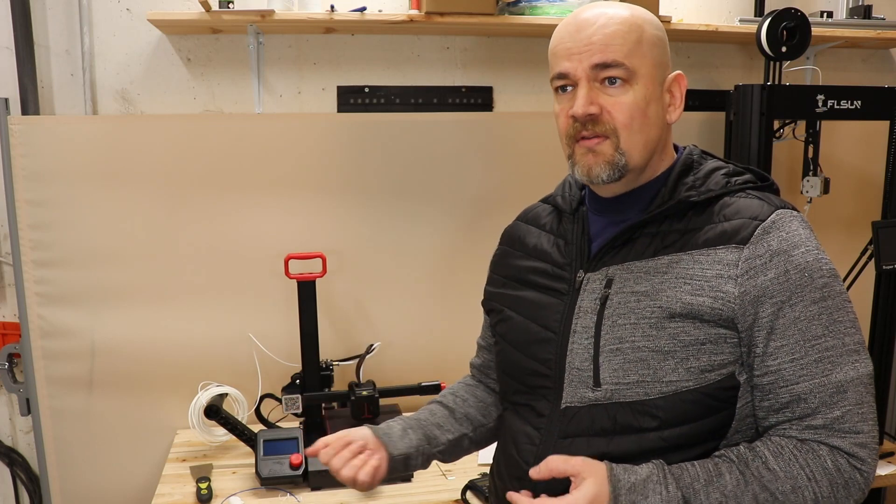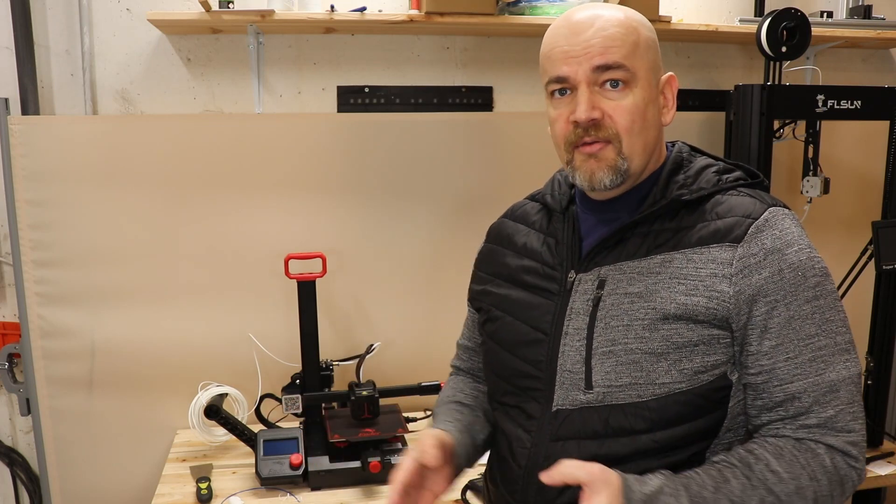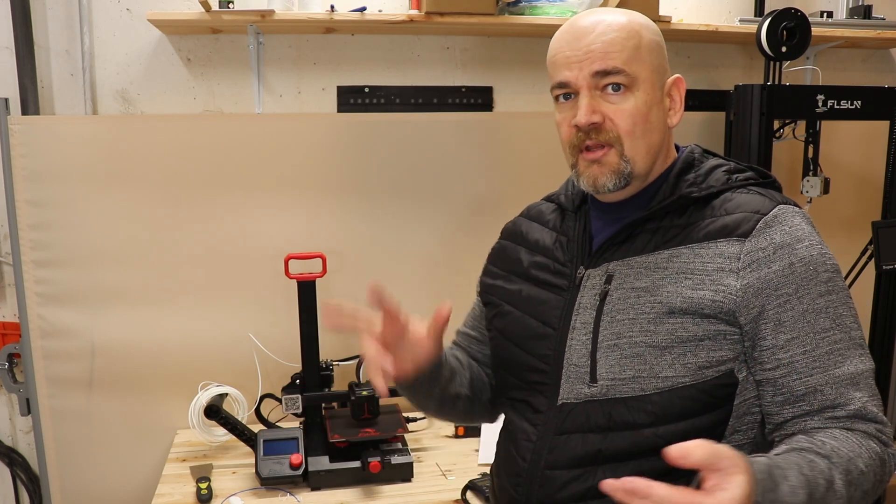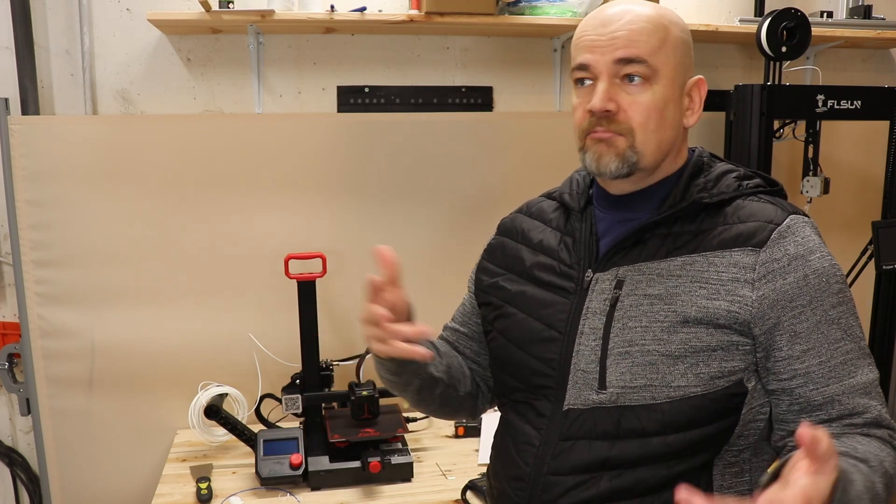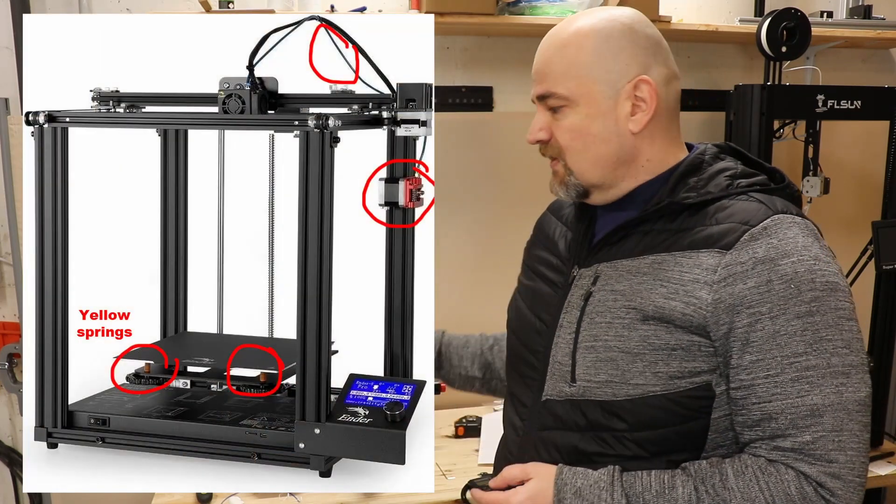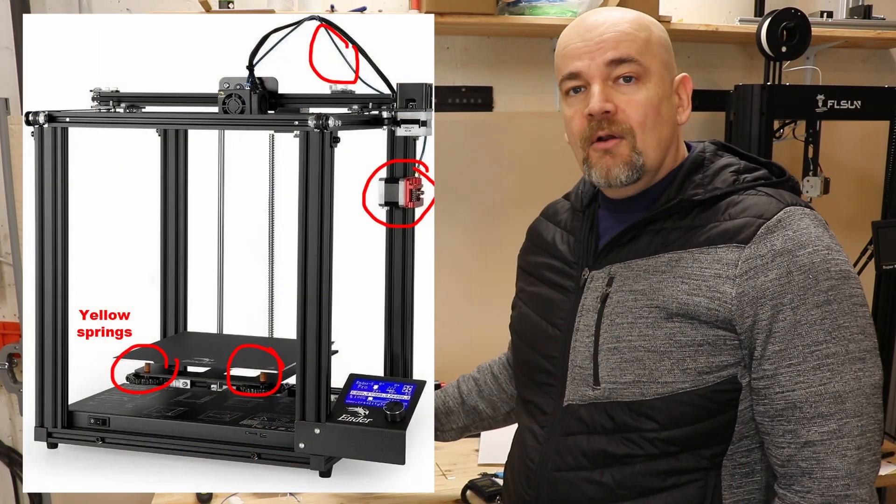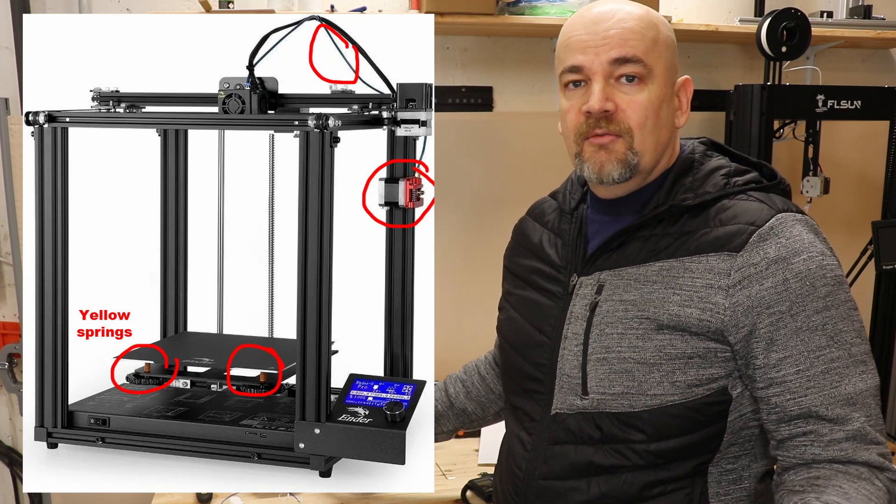When I replace these springs. But also some other printers arrive with these springs. For example Ender 5 Pro arrives with the 3 most common upgrades on Ender 3 for example. And that's a metallic extruder, Capricorn teflon tube, and also these yellow stronger springs.